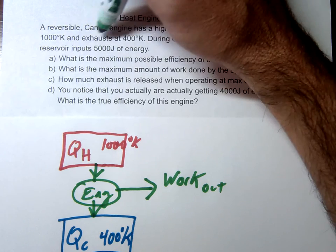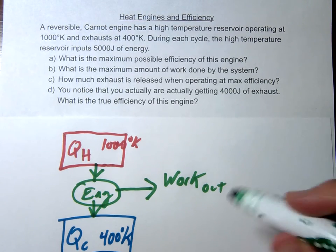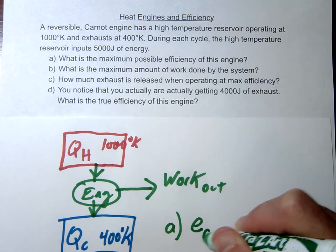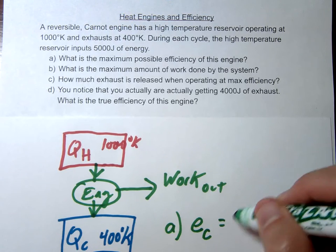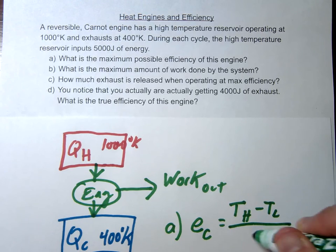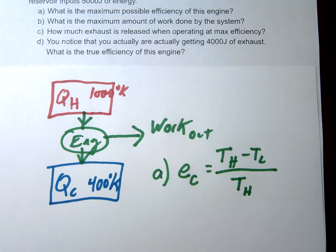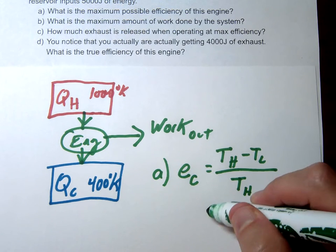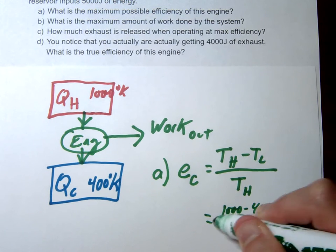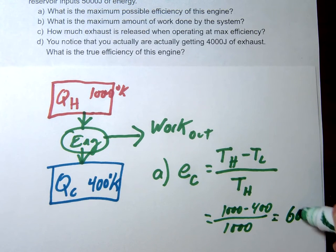So let's go ahead and do this. So the first thing is, it's a Carnot engine, and it's just asking about the maximum possible efficiency. So remember, the efficiency, the maximum possible efficiency, and we often write that as EC. This is the difference between the high temperature region and the low temperature region, divided by the high temperature region. So we went from 1000 to 400, and we'll just go ahead and divide by 1000. Notice that's going to give us 60%.